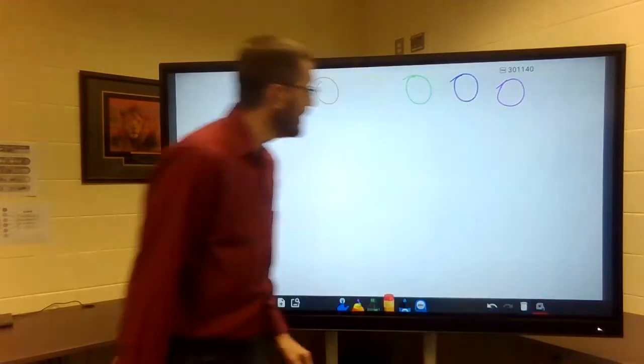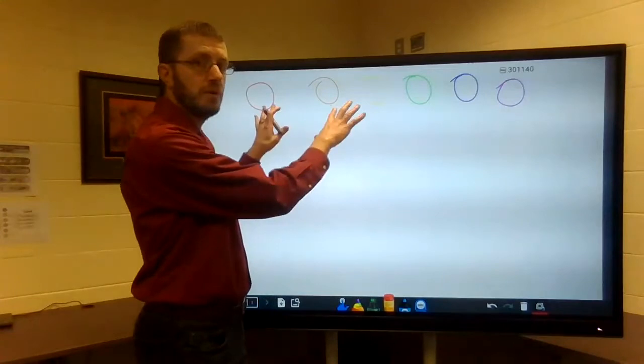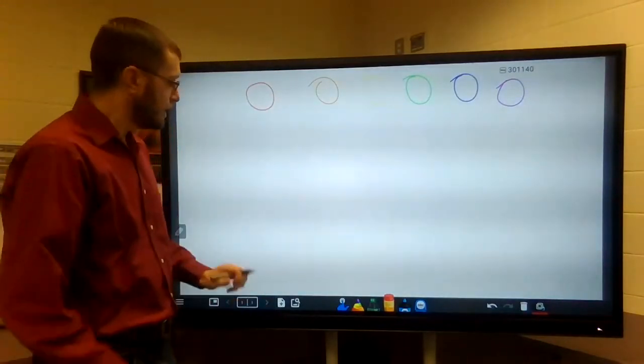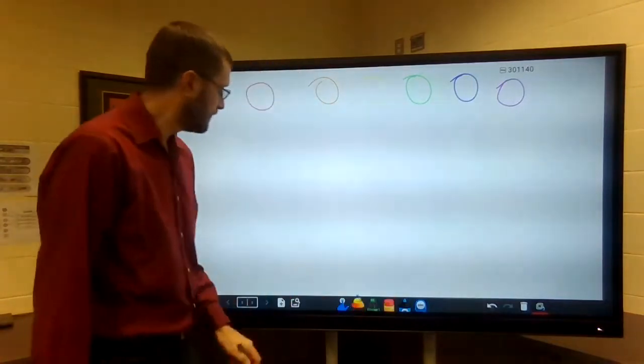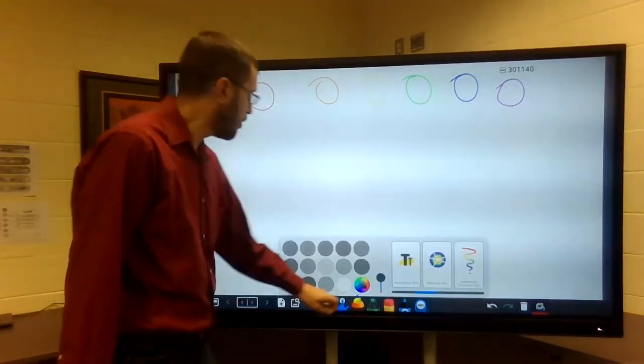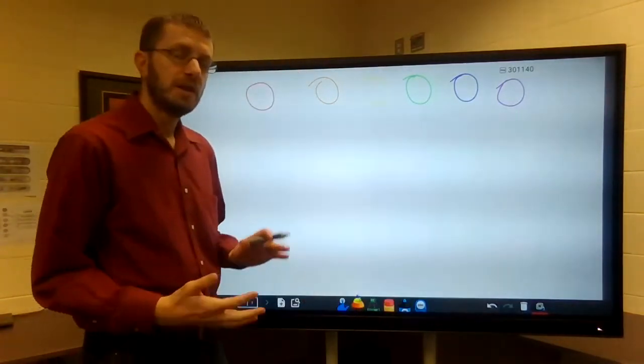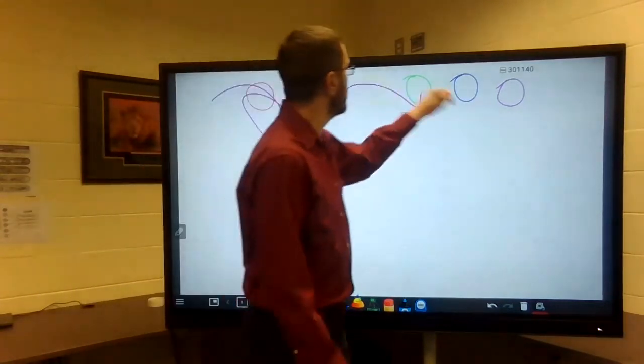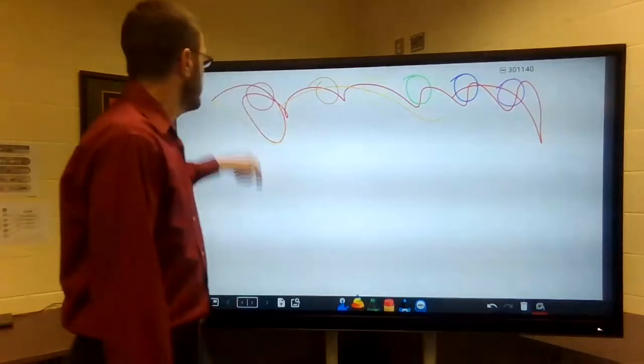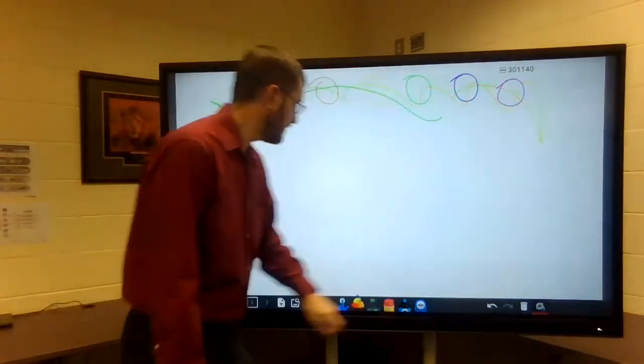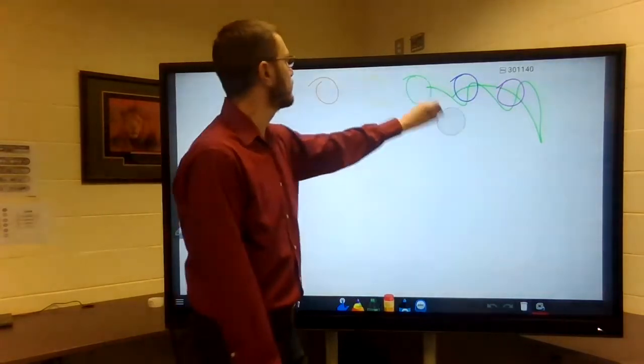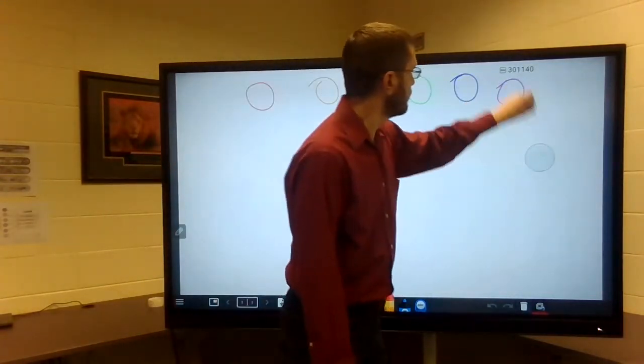what that does is it essentially throws those, whatever's on the screen, in the background. So now when I write, I'm essentially writing over top of that. It's like a second layer, so to speak. So I can write over this, and then if I want to erase that, I can erase it, and those circles still remain.